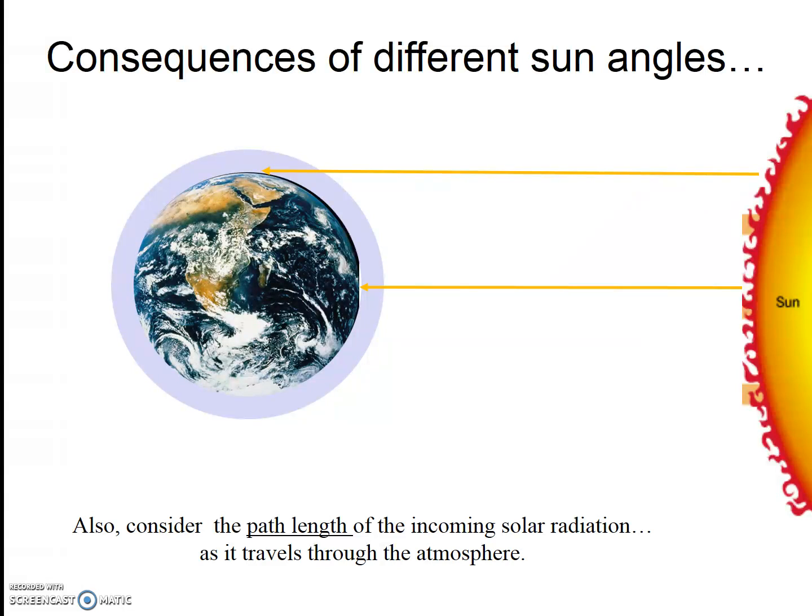While traveling through the atmosphere, radiation can be reflected, scattered, and absorbed. So if there's a longer path length through the atmosphere, more of this radiation is going to be reflected, scattered, and absorbed, and ultimately not reach the Earth. This is another reason why higher latitudes are cooler. Less radiation is striking the Earth.